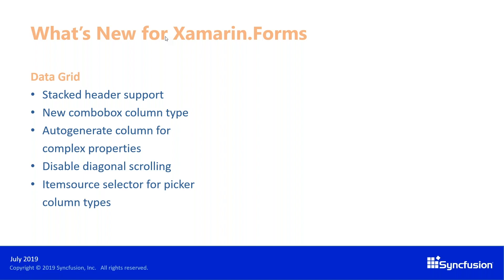The next set of features are from the data grid, which now supports stacked headers that span across multiple columns, so columns can be grouped under common column headers. There is also a combo box column type that allows you to easily choose an item from a list, with autocomplete support to easily search and select an item from a dropdown. You can also disable diagonal scrolling in the data grid so it scrolls either vertically or horizontally based on how the user pans.